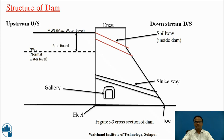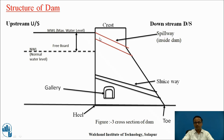Now let us consider the structure of the dam. This is the cross section of the dam. Here, this is the upstream face and this is the downstream side of the dam. We can see there is a normal water level and maximum water level. The difference between maximum water level and normal water level is the freeboard. A spillway is provided within the dam — it may be provided near the dam or away from it. The purpose of spillway is to expel out the excess water from the upstream side to the downstream side.